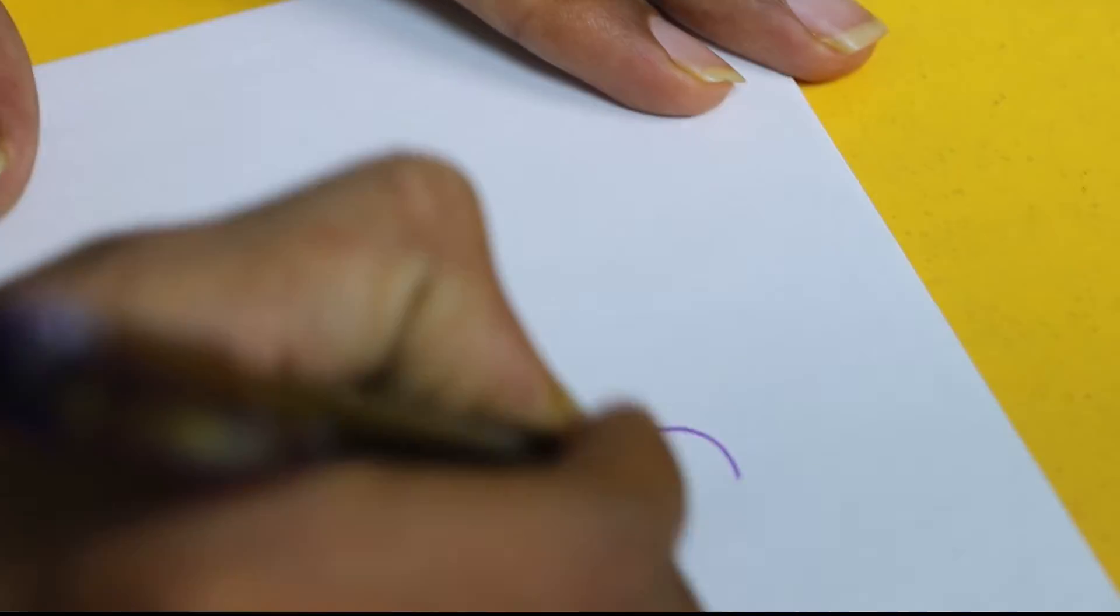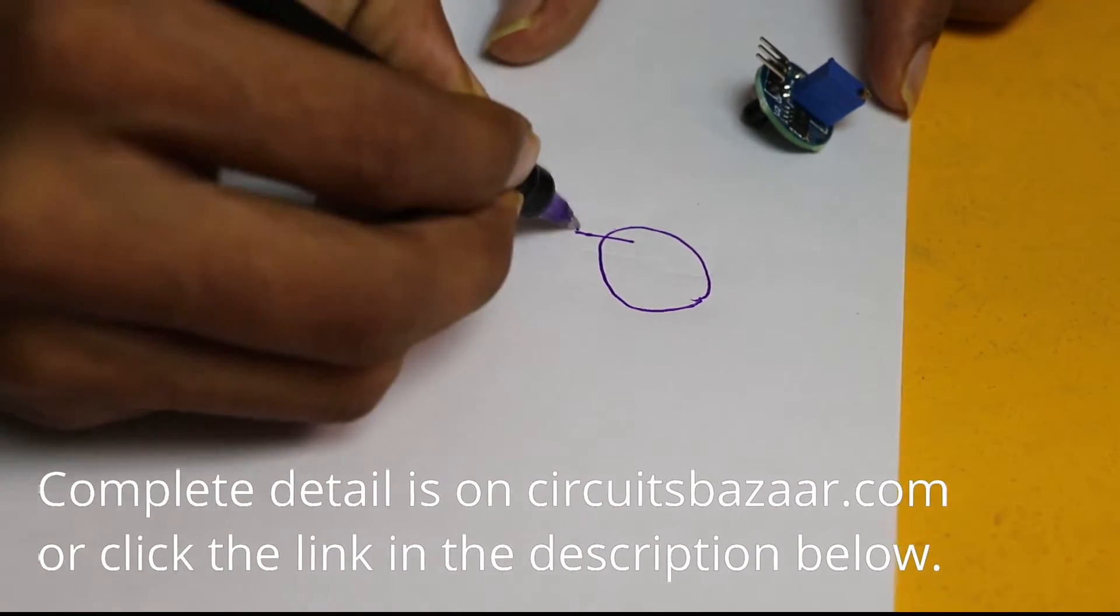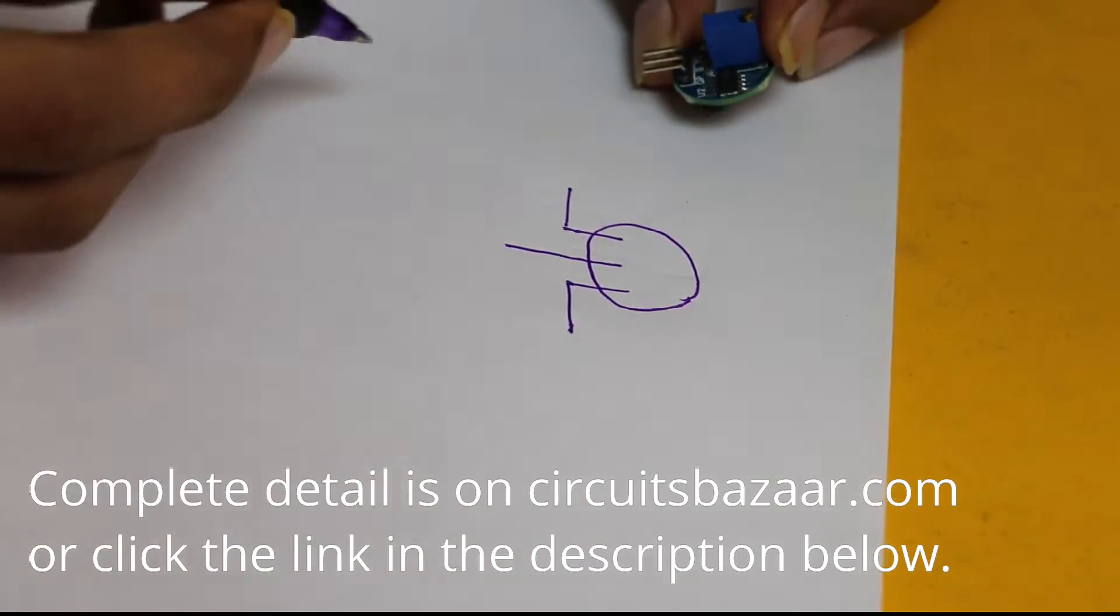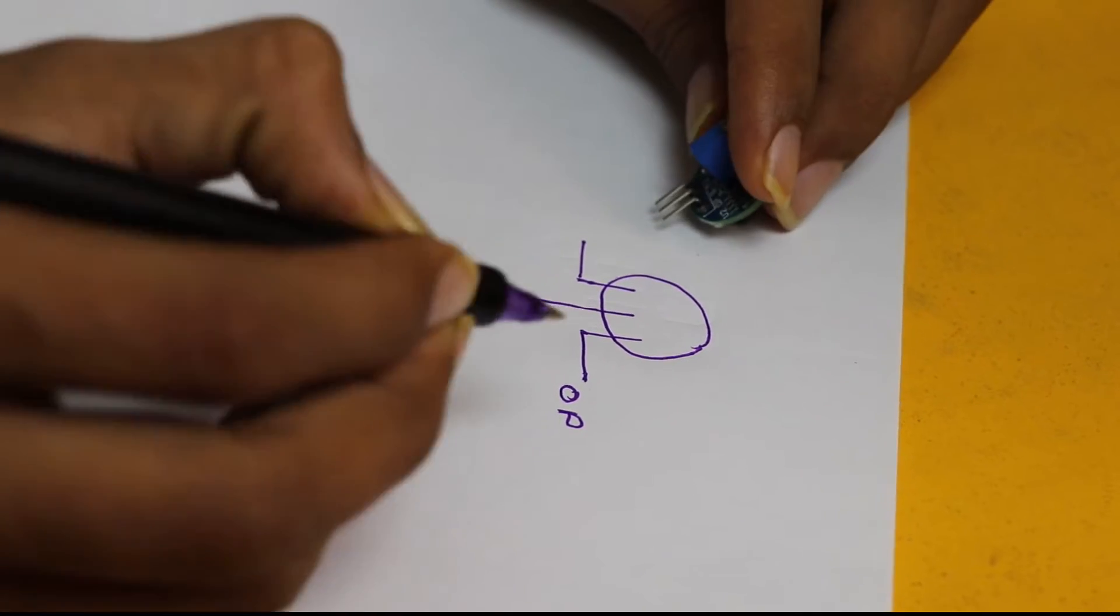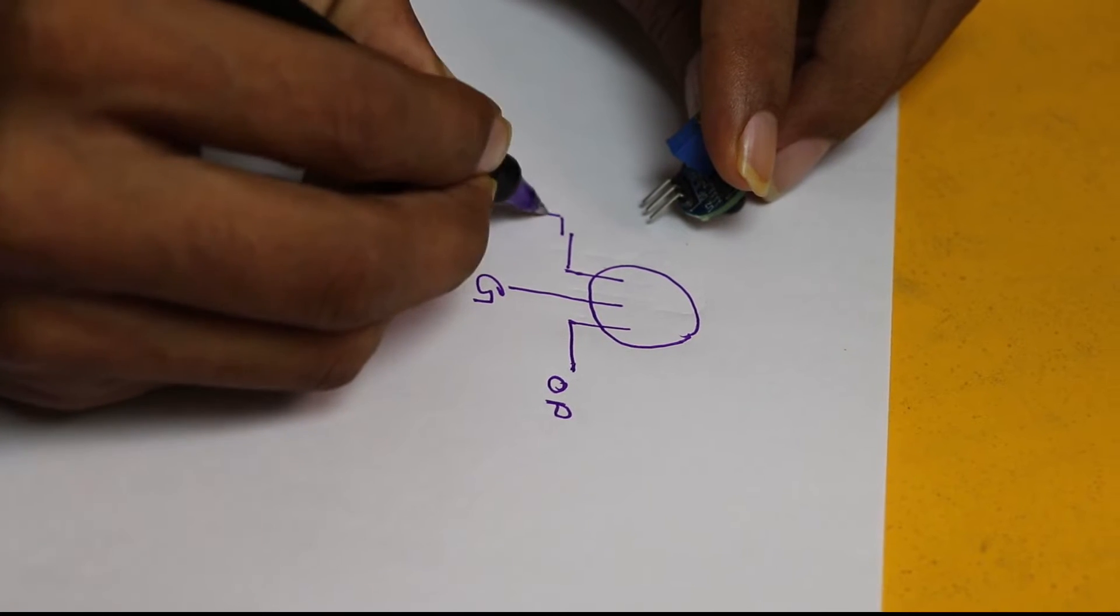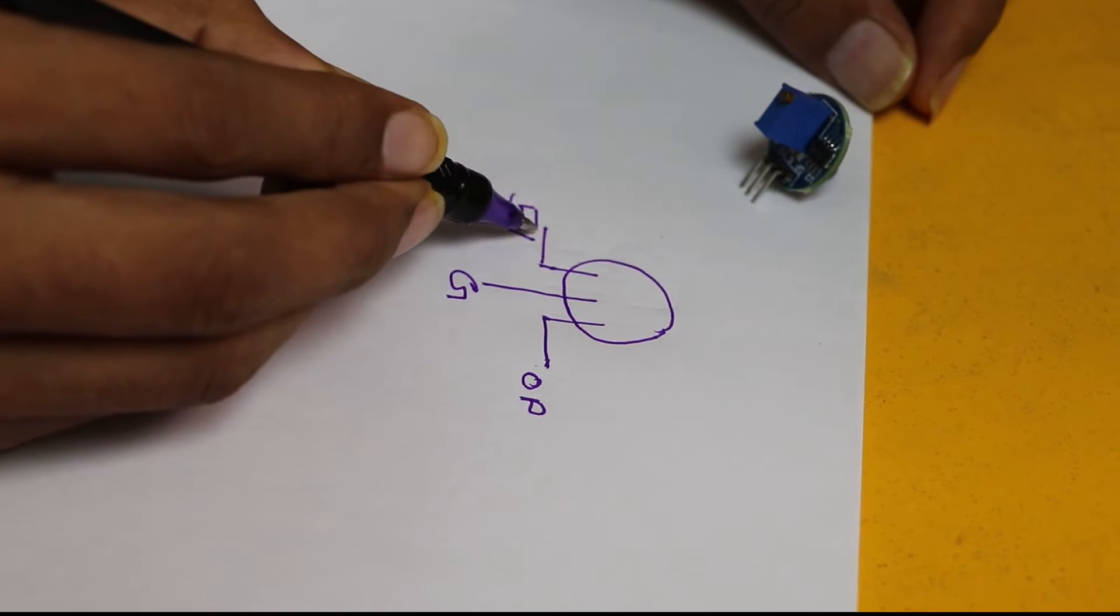As I already told you, they will come along with the eye blink sensor. Now let me design a simple circuit diagram to show you the working. This round shape eye blink sensor has three pins. The third pin is output pin written OP, the second pin is ground, and the first pin is 5 volt.